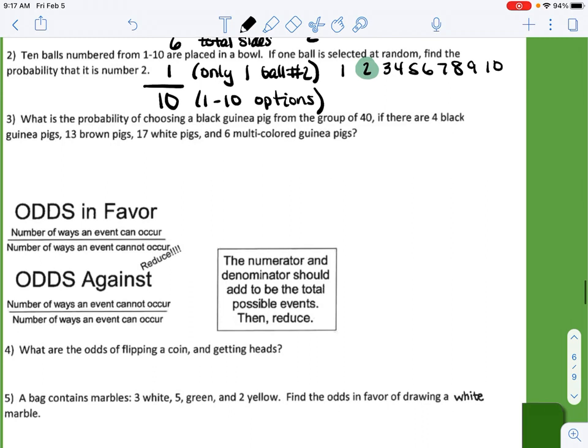Another example: what is the probability of choosing a black guinea pig from the group of 40 if there are 4 black guinea pigs, 13 brown guinea pigs, 17 white guinea pigs, and 6 multicolored guinea pigs? Well, if we know there are 4 and that's what's in question, we can choose 4 out of 40. So there's 4 black, 4 ways black can be chosen, 40 guinea pigs total. So you have a 1 tenth probability of choosing a black guinea pig.